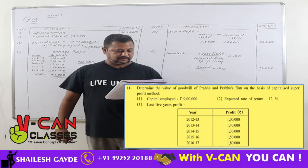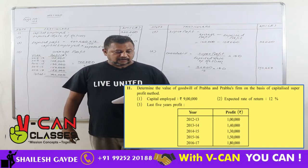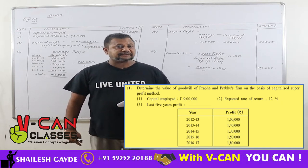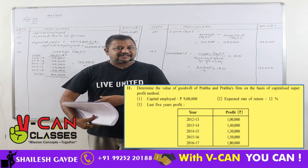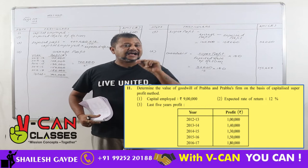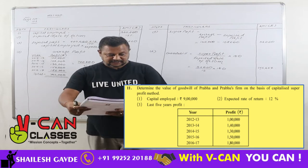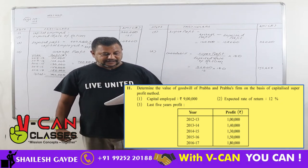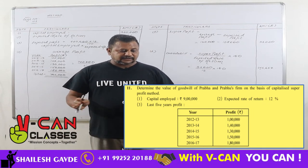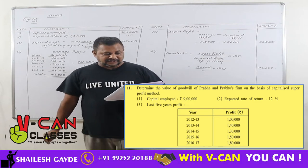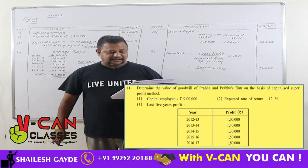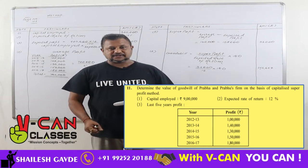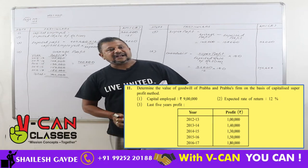Now refer question number 11: determine the value of goodwill of Prabha and Prabhu's firm on the basis of the capitalized super profit method. They've given capital employed nine lakhs, expected rate of return 12%, and last five years' profits: 2012-13: 1 lakh, 2013-14: 1 lakh 40,000, 2014-15: 1 lakh 30,000, 2015-16: 1 lakh 50,000, and 2016-17: 1 lakh 80,000.